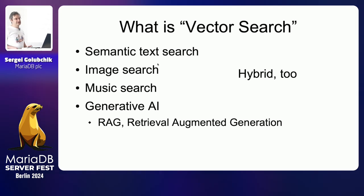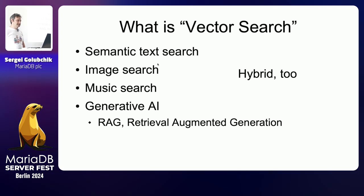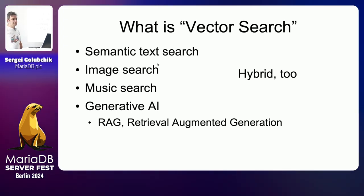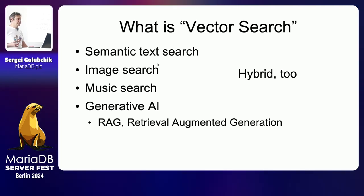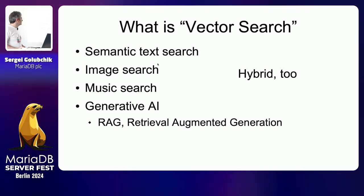Vector search is the underlying functionality that powers user-level features like semantic text search — that's when you search not for words but for the meaning of the text — and also image search, music search, video search. You can do hybrid too, like describing in words what kind of music or image you want to find.